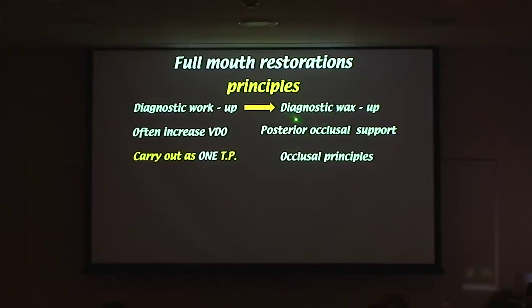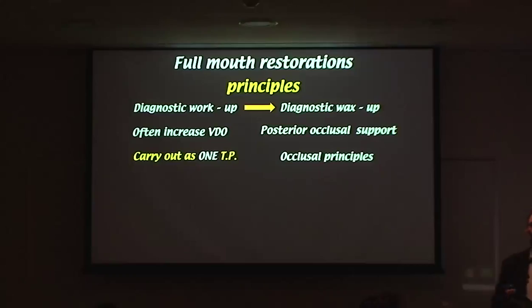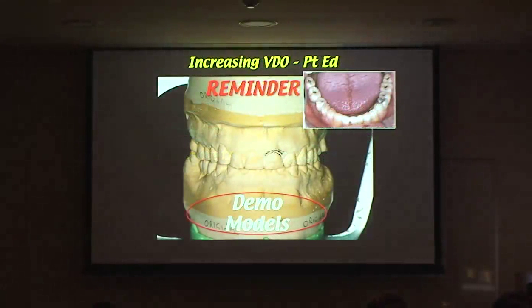We do a wax-up. We'll often increase the vertical, which means you've got to do it all as one shooting game - you've got to have occlusal support and carry out that treatment as one treatment plan. Then you stick to those occlusal principles. Basically you want bilateral even occlusal contact, not necessarily canine exclusion, but no working side occlusion or interferences. It might be group function, might be canine exclusion, might be anterior guidance on one or several teeth, might be canine guidance anteriorly. You spread the load basically.